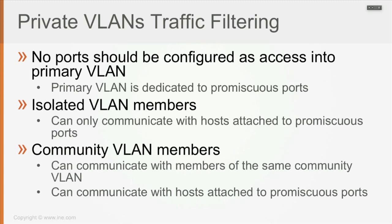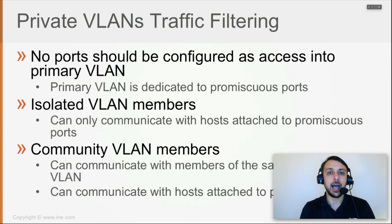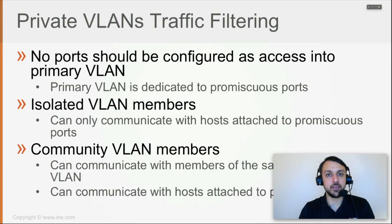From the community VLAN point of view, any device attached to the community secondary VLAN — like if I have 10 devices in community VLAN number 15 — they can actually communicate freely between each other and they can also communicate with hosts attached to promiscuous ports. That's why it's called a community: members of the same community VLAN can freely communicate with one another.